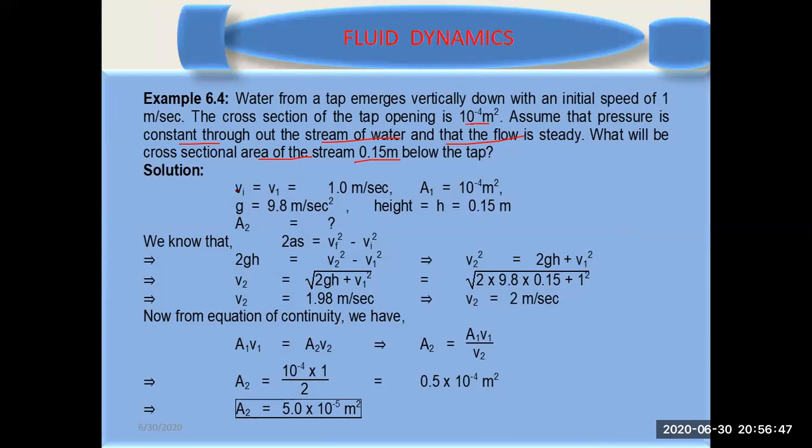So this is the question. If you look at this, basically v₁ velocity is one meter per second. The area at that point, the area of projection, is 10⁻⁴.